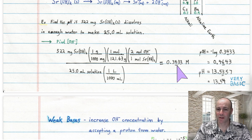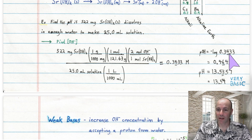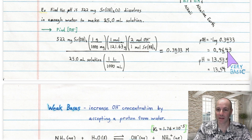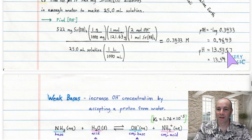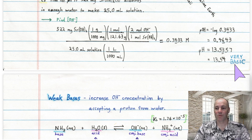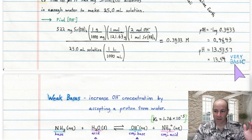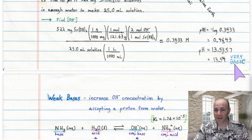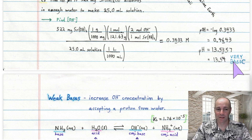Now that we know the hydroxide concentration, we calculate the pOH as the negative log of 0.34, which comes out to 0.46. So the pH is whatever you add to 0.46 to get 14 — the pH comes out to 13.54. That's a very basic solution. The pH scale ranges from about 1, which is very acidic, up to about 14, which is very basic, so this is getting up near 14.